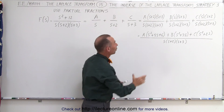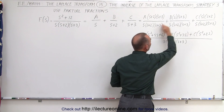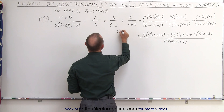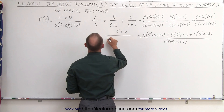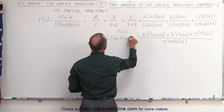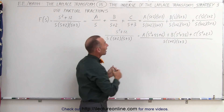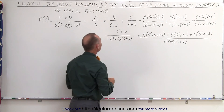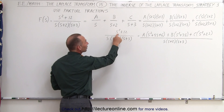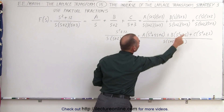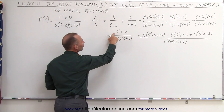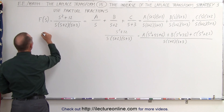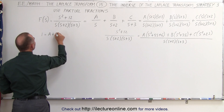I just write it like this to make it a little bit quicker, realizing that this equals our original fraction, which is s squared plus 12 divided by s times s plus 2 times s plus 3. Now notice on the right side we have an a s squared, a b s squared, and a c s squared. On the left side we have a 1 s squared, which means that 1 must equal a plus b plus c.